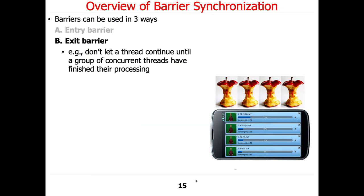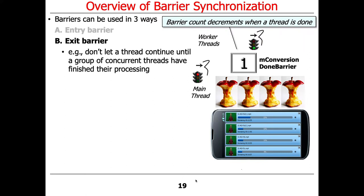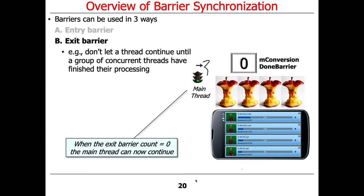There's also something called an exit barrier, which prevents a thread from continuing until a bunch of other threads have finished what they're doing. Going back to our example, the main thread, after initializing data structures and setting the worker threads in motion, waits on an exit barrier called mConversionDoneBarrier until all worker threads are finished. As each thread finishes, it decrements the count by one, and when the exit barrier count reaches zero, the main thread can continue. So that's an exit barrier.